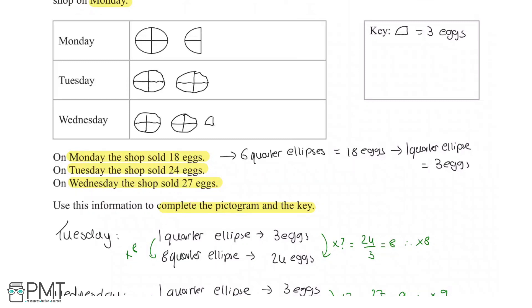This question is worth 4 marks. The first mark comes from deducing a relation between the number of ellipses and the number of eggs. So in this case we've shown that 1 quarter ellipse represents 3 eggs, so this gets us our first mark. Our second mark comes from getting 2 ellipses for Tuesday, as I have done here. The third mark comes from getting 2 and a quarter ellipses for Wednesday, as I have done here. And then your fourth mark comes from a correctly represented key, as I have written up here.